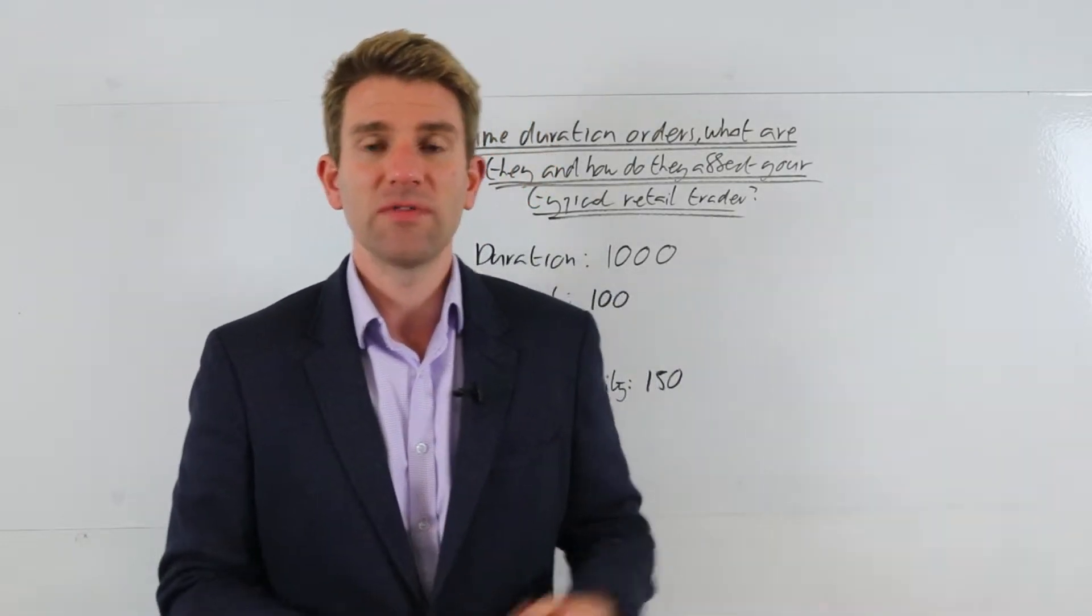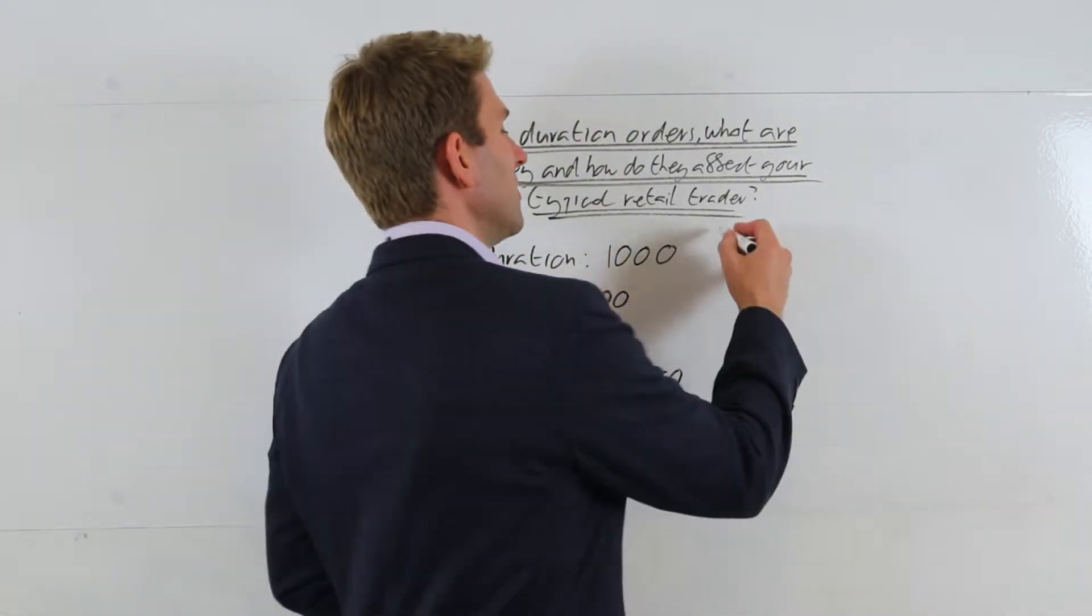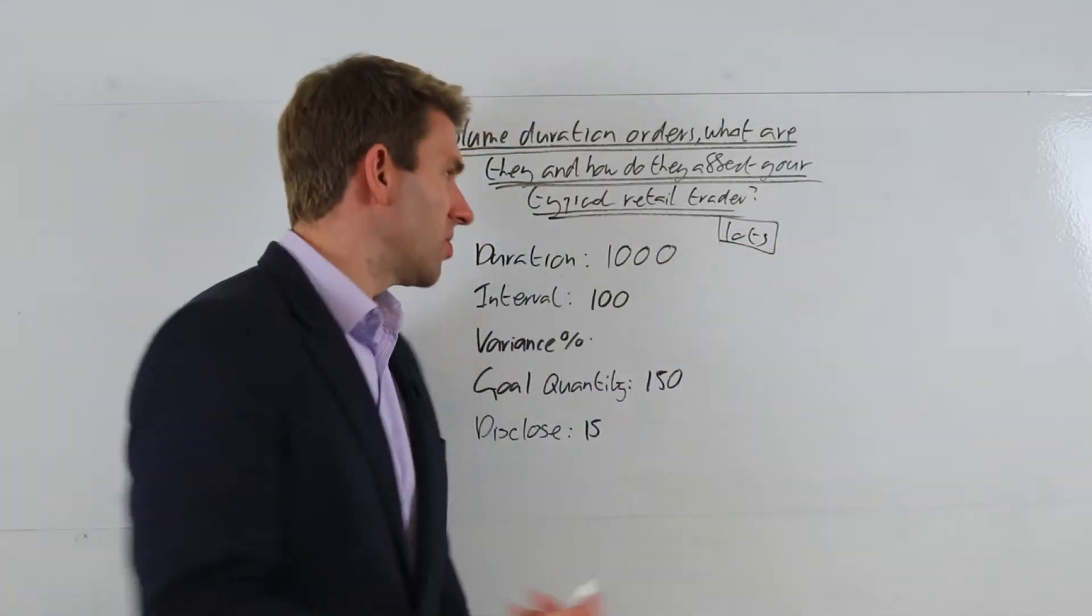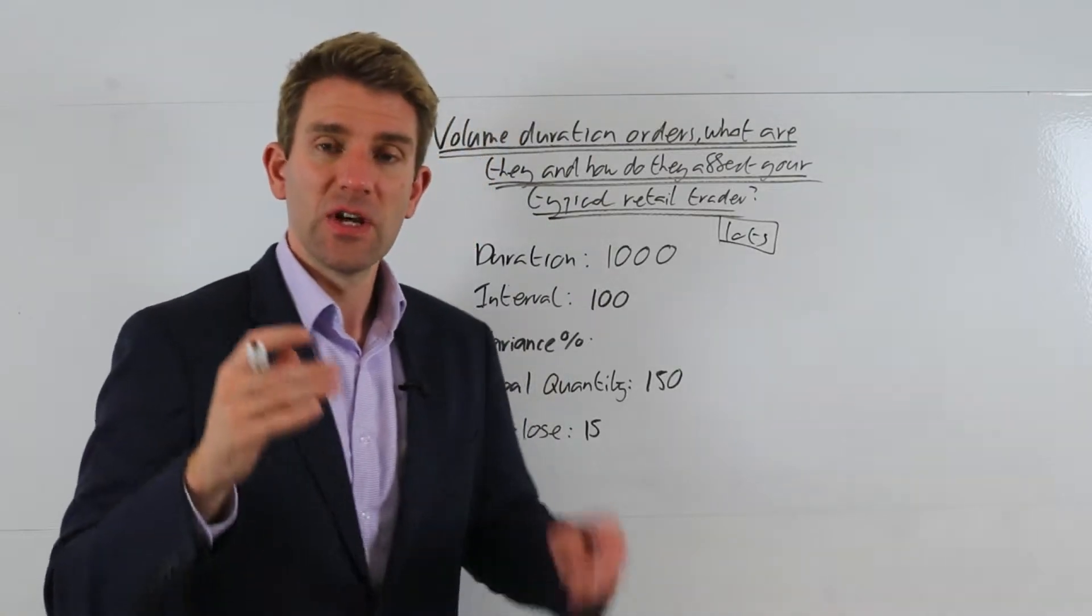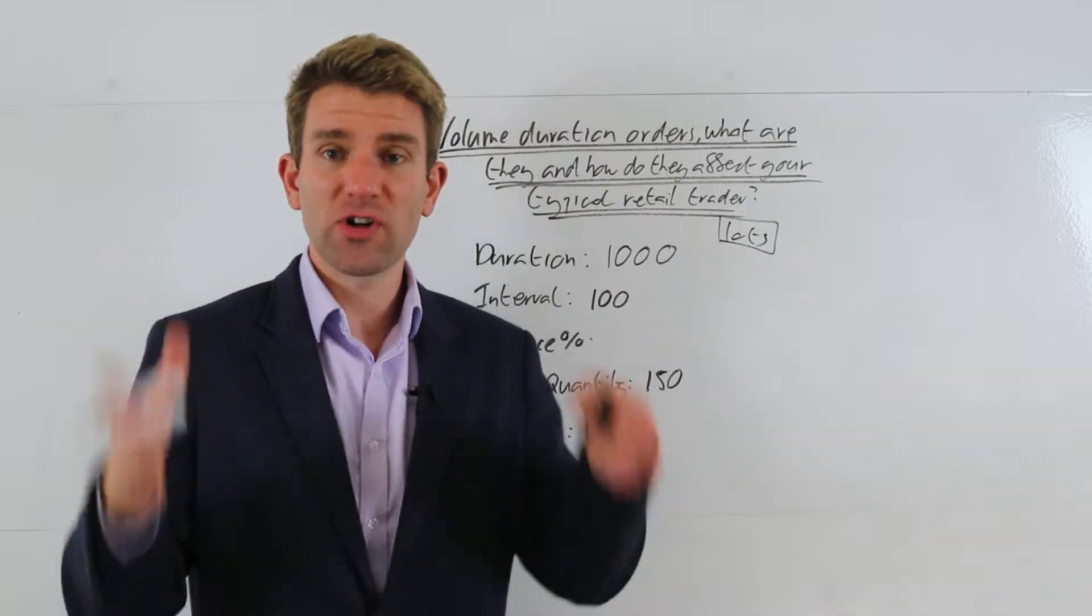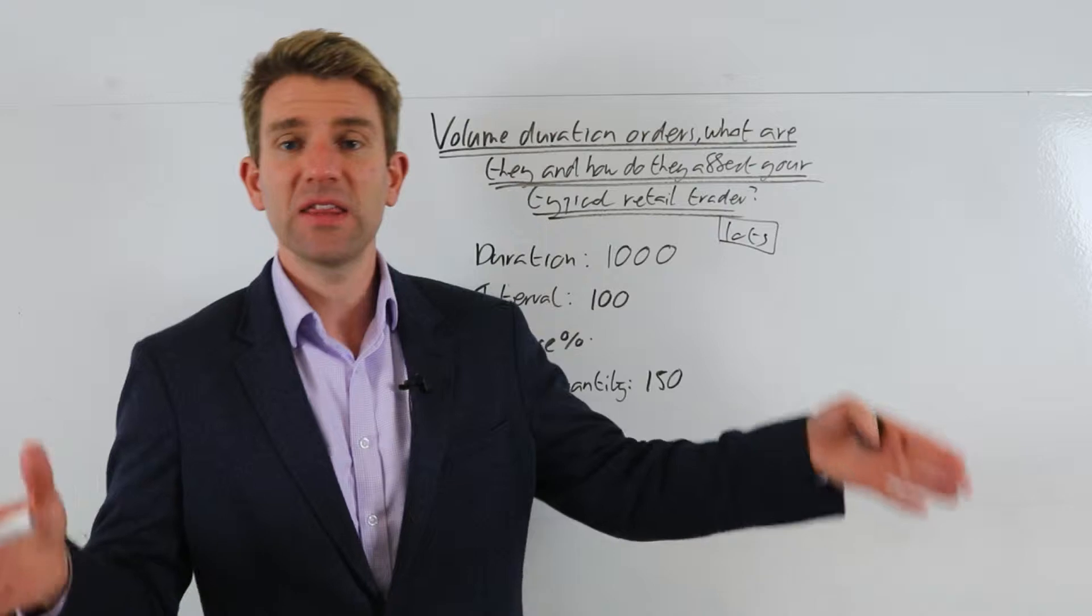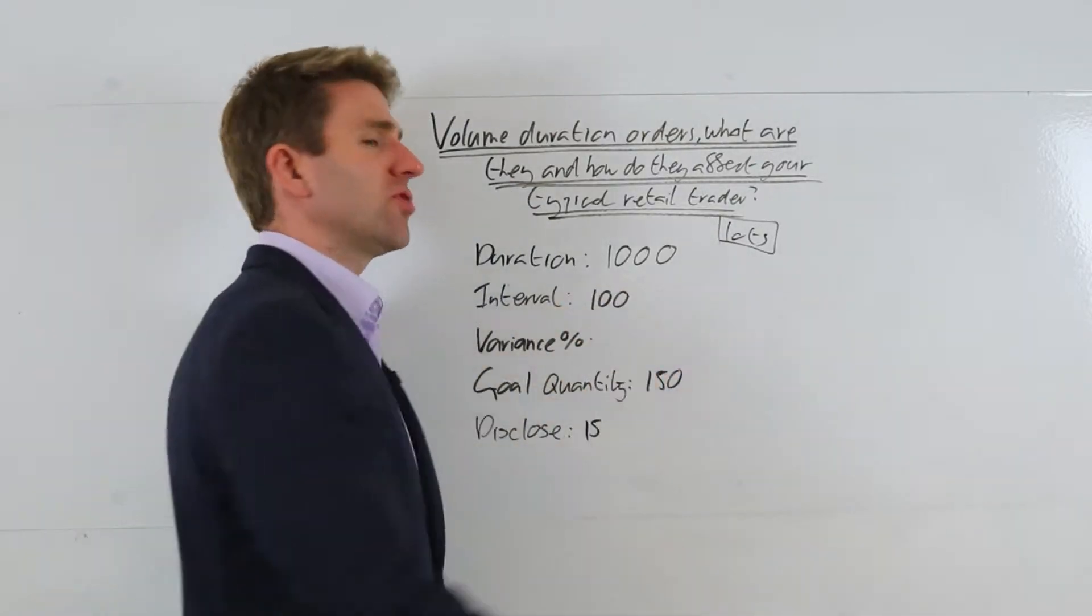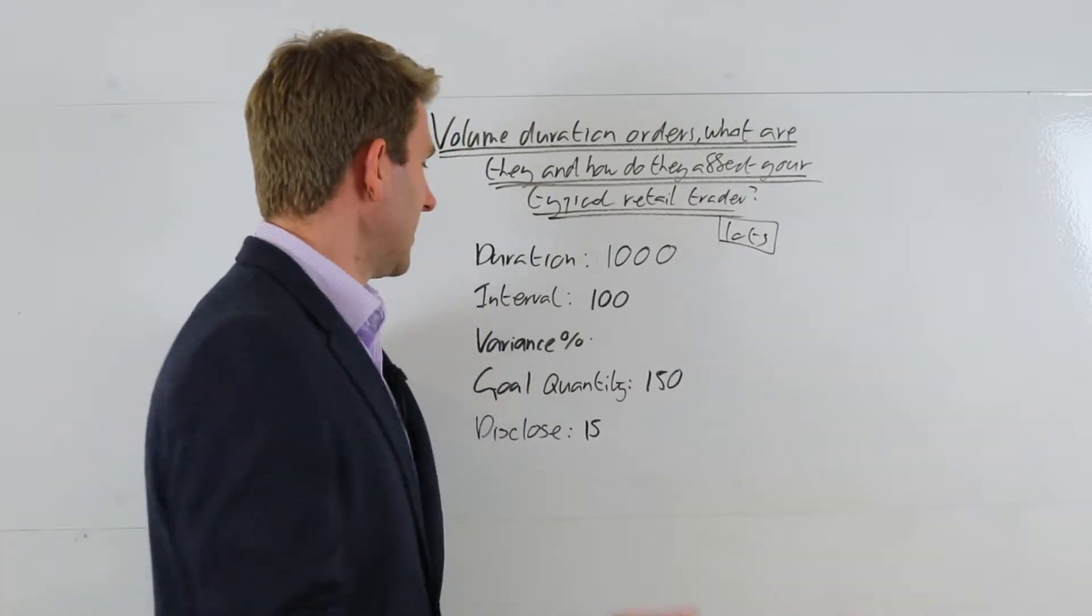So let's say we've got a duration of 1000, and these are going to be lots or contracts guys, just for clarity here and ease of example. We've got duration of 1000, which basically means we are looking to execute this trade over a period of 1000 contracts traded. It's going to depend on the instrument, going to depend on many variables - it might be 10,000, might be 100, size of the order, etc. But for this example, the duration - which is when we're trying to execute the order - is over 1000 traded.